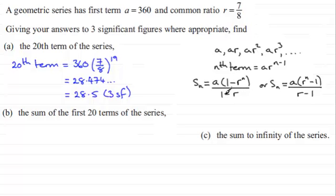But we tend to use this one when r is less than 1, it just keeps the top and the bottom positive. And in this case r is less than 1, so it's a good idea to use this first version.